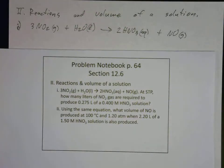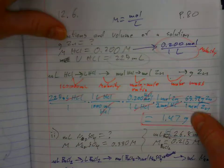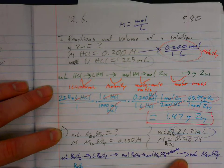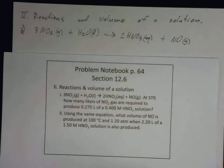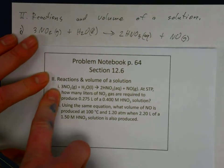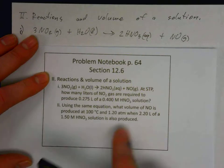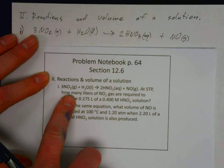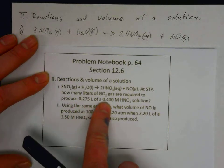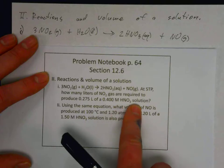We previously did stoichiometry problems where we found the volume of one solution from the volume of another. Now we're going to use molarity in combination with gas law problems and put it all together. In this first problem, we're given an equation and asked: at STP, how many liters of nitrogen dioxide gas are required to produce 0.275 liters of a 0.4 molar nitric acid solution?